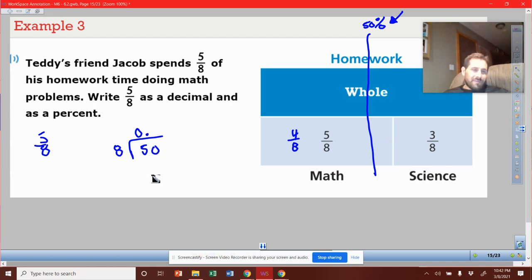Eight is going to go into 50 six times. Eight times six is 48. We're going to get a two and bring this down. Eight's going to go into 20 two times because eight times two is 16. So I can minus those out and get a four. And eight's going to go into 40 five times. Eight times five is 40. And then we'll get zero. And that tells me to stop.